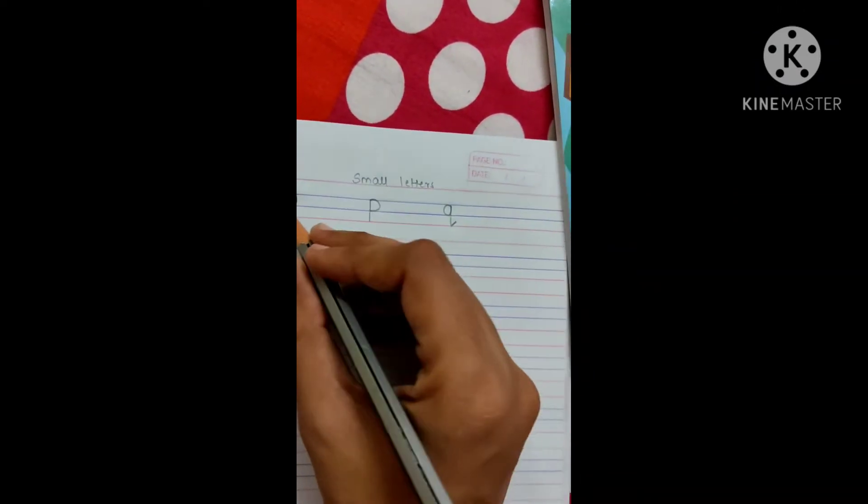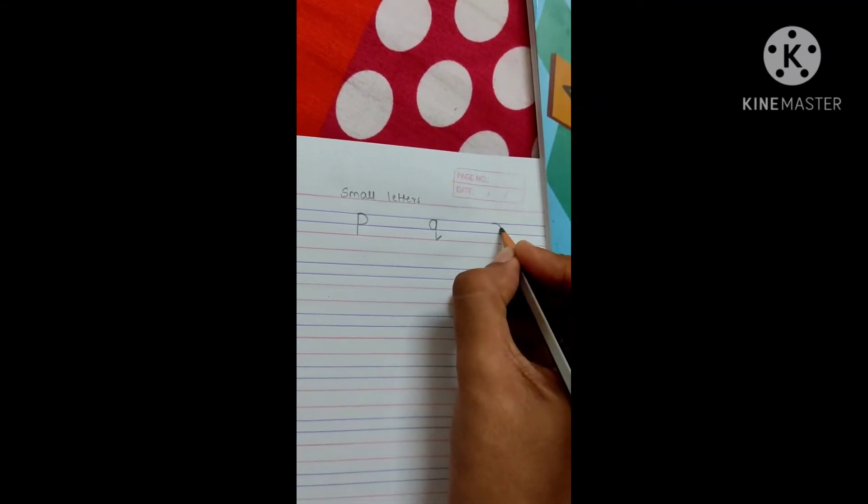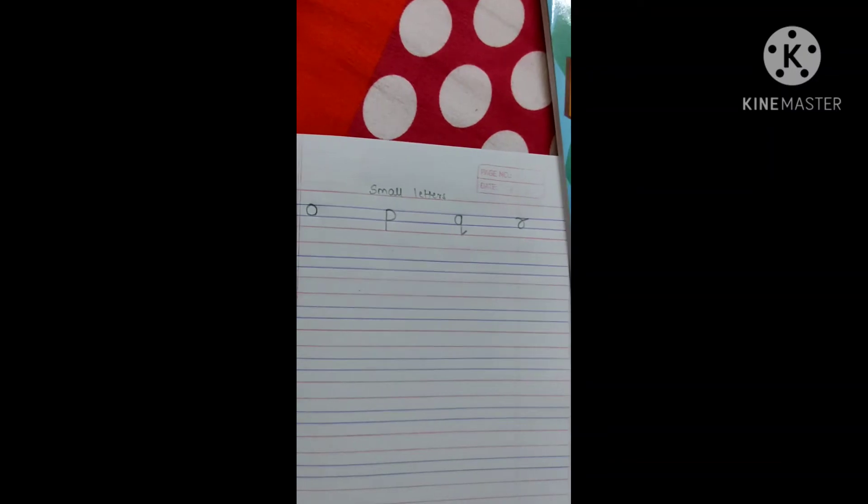O, P, Q. Now, R. Writing R, we are going to write R like this. Okay?